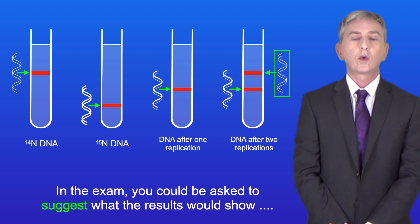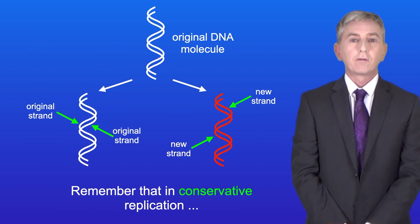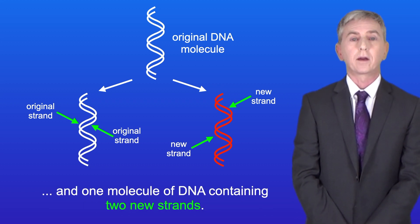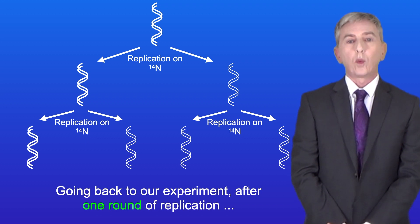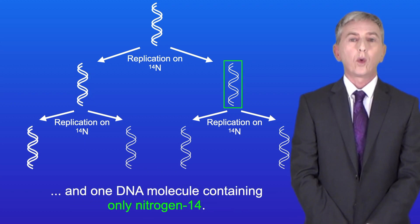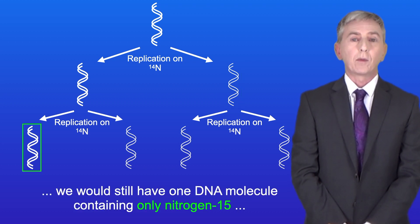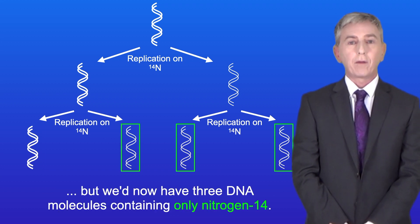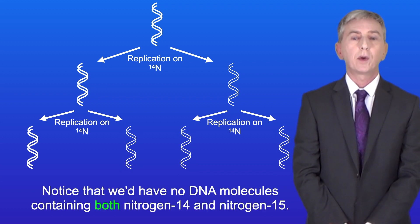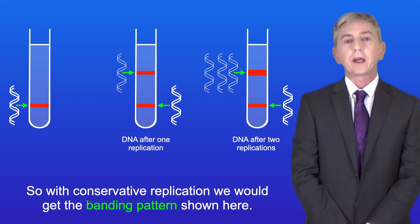In the exam you could be asked to suggest what the results would show if DNA replicates conservatively rather than semi-conservatively. In conservative replication we end up with one molecule containing two original strands and one molecule containing two new strands. After one round of replication we would have one DNA molecule containing only nitrogen-15 and one containing only nitrogen-14. After two rounds we'd still have one molecule with only nitrogen-15 but three molecules with only nitrogen-14. Critically, there would be no DNA molecules containing both nitrogen-14 and nitrogen-15, so with conservative replication we would see that different banding pattern — no intermediate band.